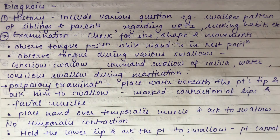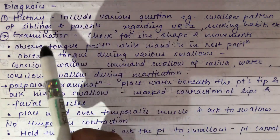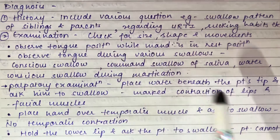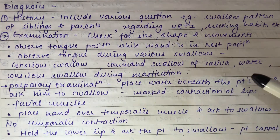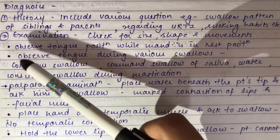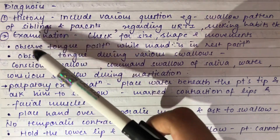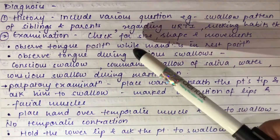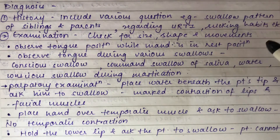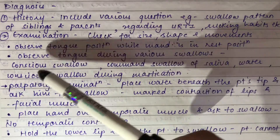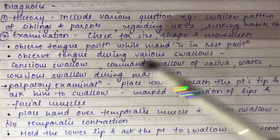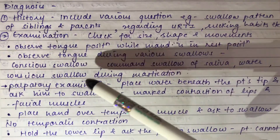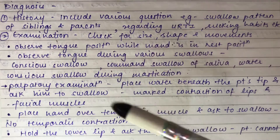Examination involves checking the size, shape, and movement of the tongue. The tongue position is observed while the mandible is in the rest position, and the tongue is observed during various types of swallows: conscious swallow and command swallow of saliva.